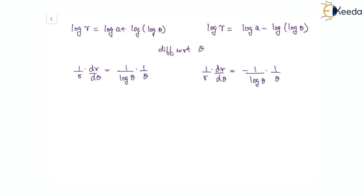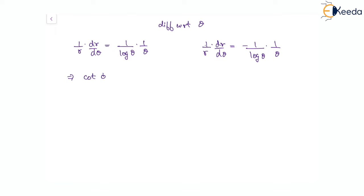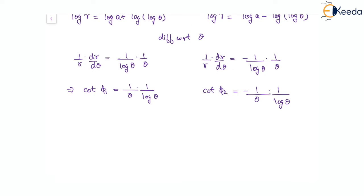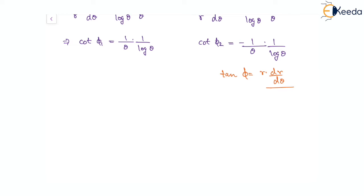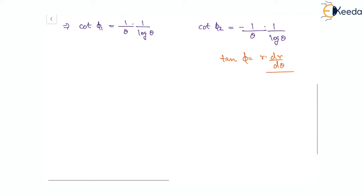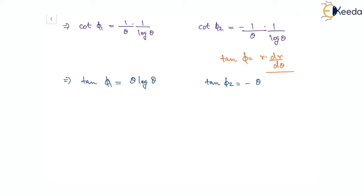Now we can see these values can be written as cot φ₁ equal to 1 by θ times 1 by log θ, and cot φ₂ equal to minus 1 by θ times 1 by log θ. The reason being, we know that tan φ is given as r times dr/dθ. We couldn't get cot φ₁ or cot φ₂ as cot of some explicit angle, so after reciprocating we get tan φ₁ equal to θ·log θ and tan φ₂ equal to minus θ·log θ.